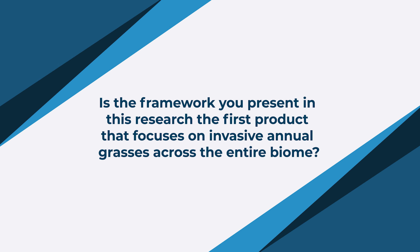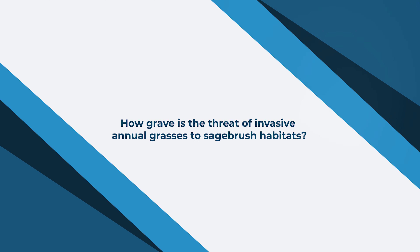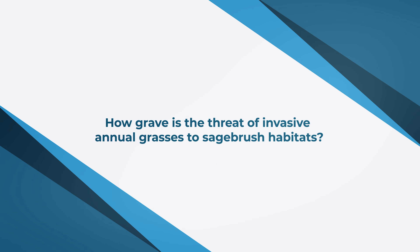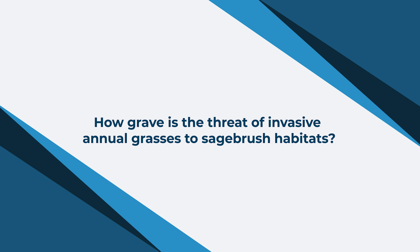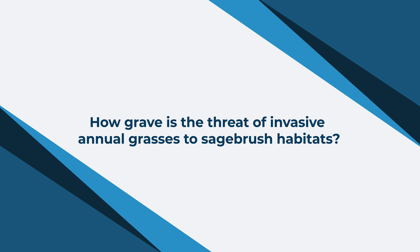In terms of a product that literally looks at the whole biome and sets priorities for where we need to be doing invasive annual grass management — this is probably the first look we've taken at that. Invasive annual grasses are non-native species that have been around since the latter part of the 1800s, and it is a little surprising that we're just now getting to the point where we have a biome-wide strategic plan.